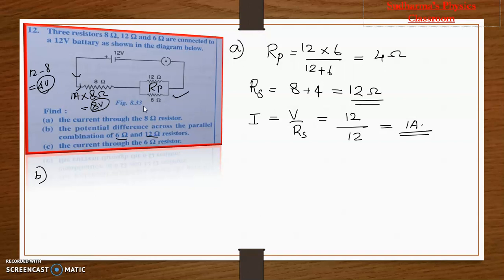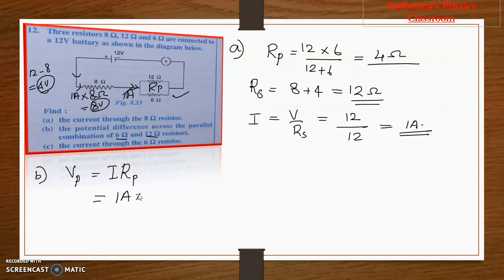Another method: V across the parallel combination = total current through the parallel combination × resistance of the parallel combination. When 1 ampere flows through the circuit, that same 1 ampere enters the parallel combination. Total resistance of parallel combination is 4 ohm, so 1 × 4 = 4 volt. This is another way to find the voltage given to the parallel combination. The first method is subtracting — whatever is dropped across the series resistor, subtract from total voltage to get the remaining voltage for the parallel combination.